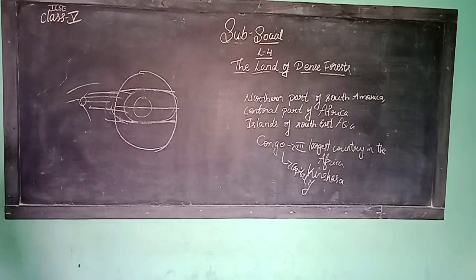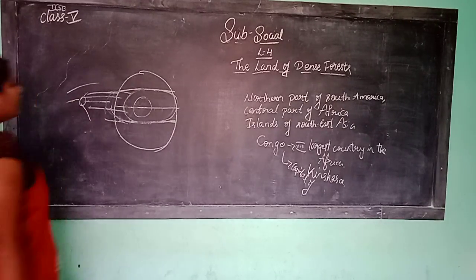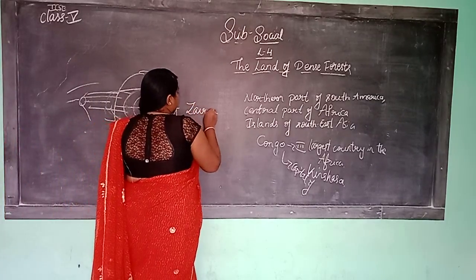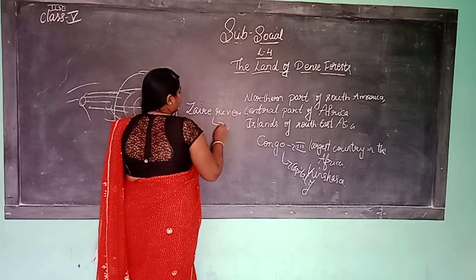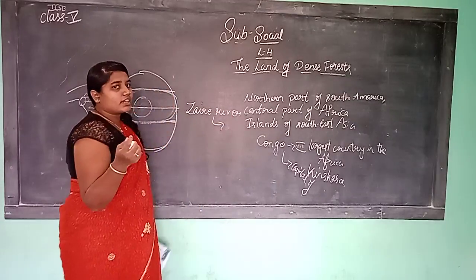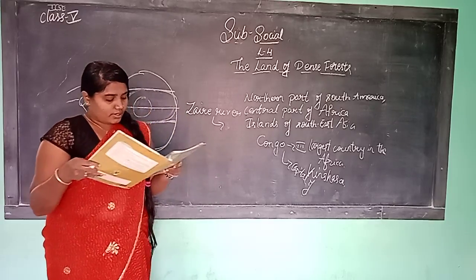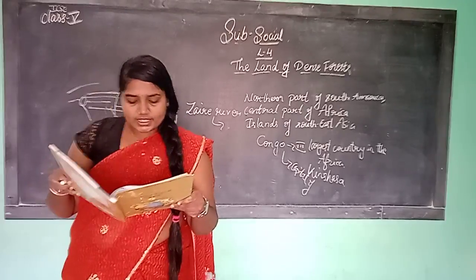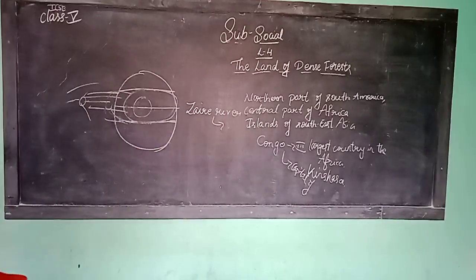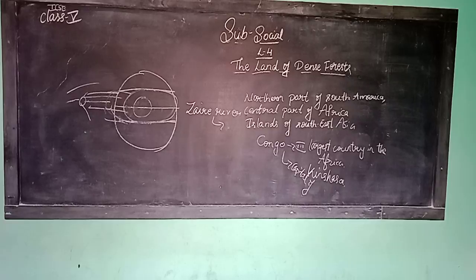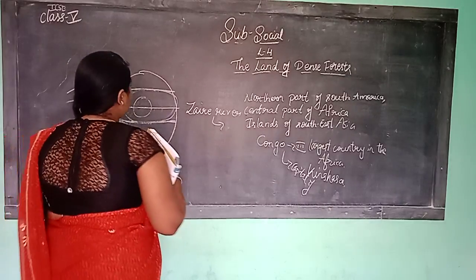Another name for the Congo River is the Zaire River. A major part of the country lies in the basin of the Congo River, from which it derives its name. Congo is one of the largest rivers in the world.